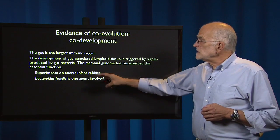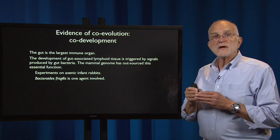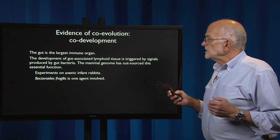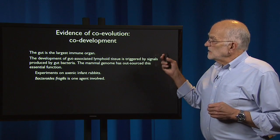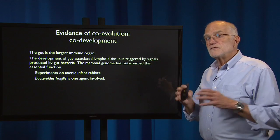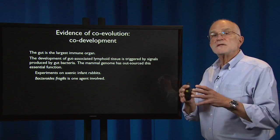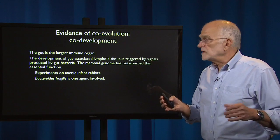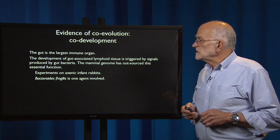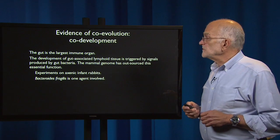Experiments on axenic infant rabbits — that is, infant rabbits that do not contain any bacteria — have demonstrated that you have to have bacteria in the gut to develop the gut-associated lymphoid tissue, and they need to be there in the first week of life. In the infant rabbits, Bacteroides fragilis is one of the agents that's involved.